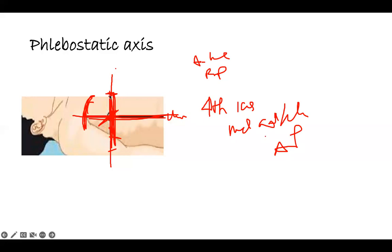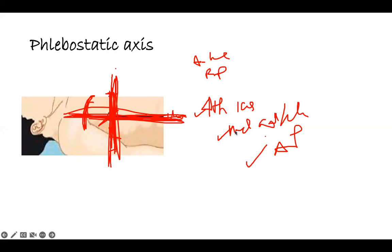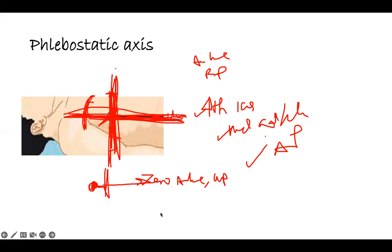AP diameter is from the anterior to posterior — the halfway across the chest. Right at the mid-axillary line, right where the axilla is, is where you have the phlebostatic point. The axillary line right in the middle is where you have the phlebostatic point — fourth intercostal space, mid-axillary line, AP diameter, where they all connect together. This is where you zero your A-line. If you don't zero your A-line, it will give you wrong readings all the time. Or you have a CVP line — central venous pressure line — and the stopcock is where you line up with the phlebostatic axis.